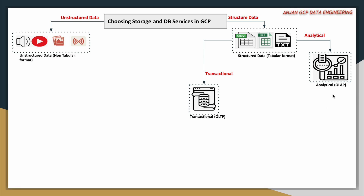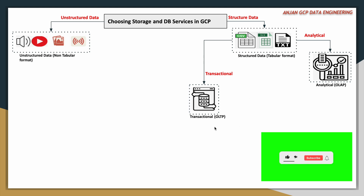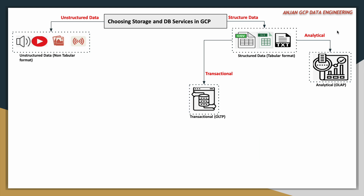Analytical data means OLAP — Online Analytical Processing system. Transactional data means OLTP — Online Transactional Processing system. In the case of analytical use cases, you will store data into a data warehouse and further consume that data to perform different kinds of analysis to bring useful business insights, which helps businesses take appropriate decisions to improve. This is called analytical data.